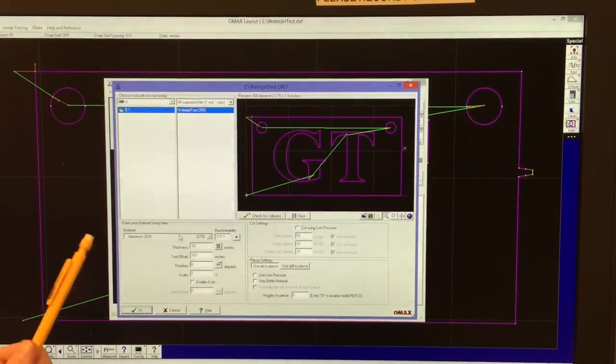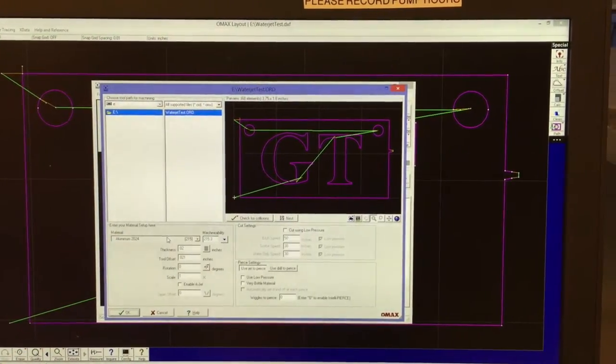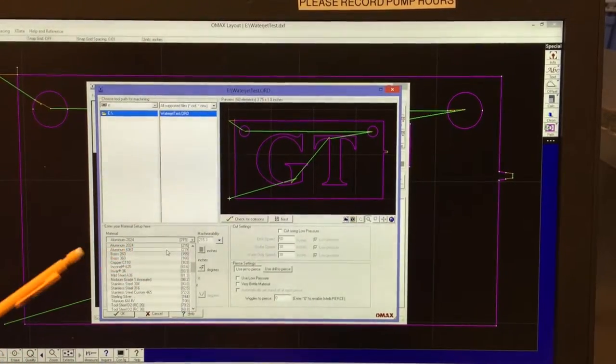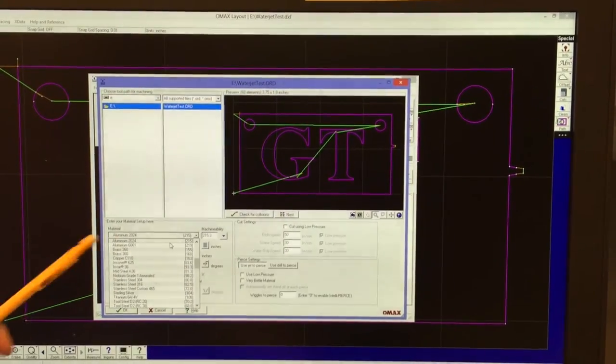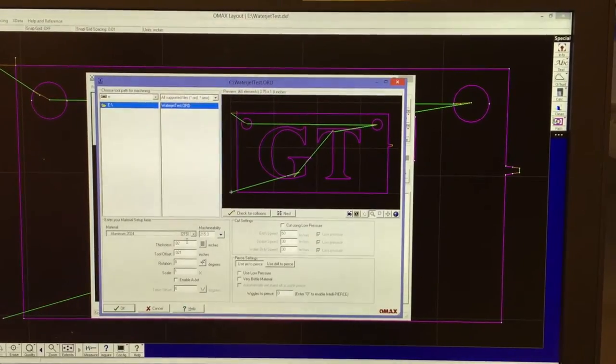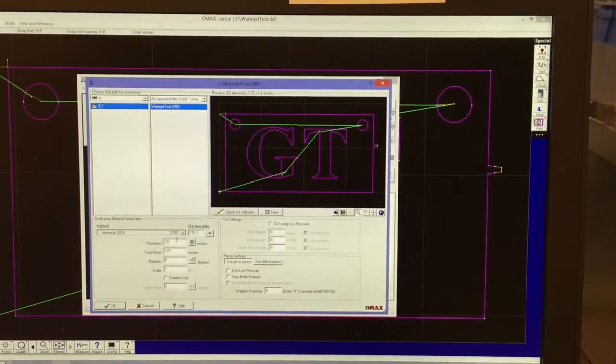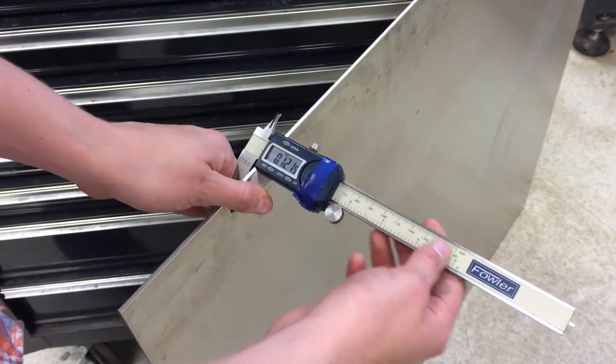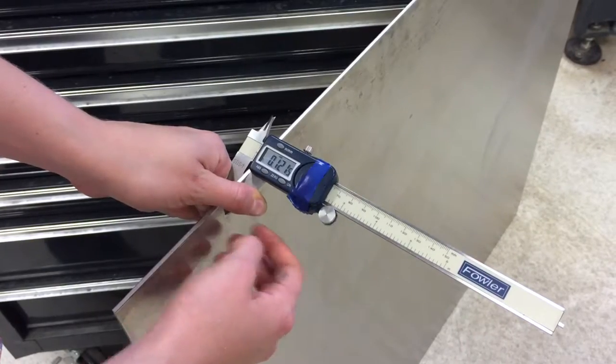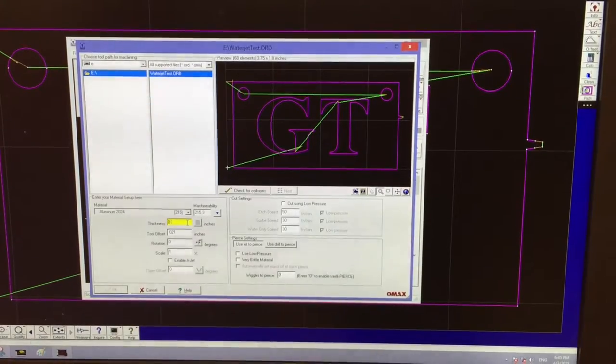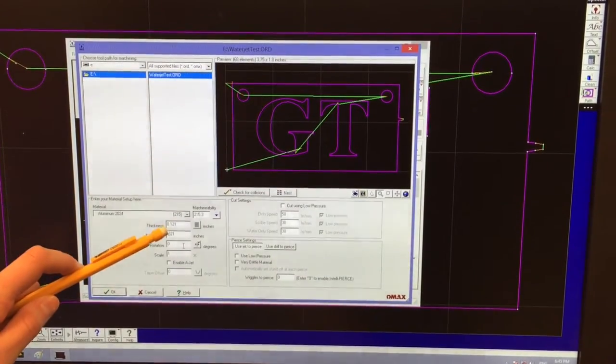So on this software, you'll need to input your material settings. You can click this drop down and pick the material, which in this case, it is aluminum 2024. So I'll click that. I also need to tell it the thickness. In this case, this sheet is 0.12 inches thick. So here, I'll enter in my material thickness and leave everything else the same.